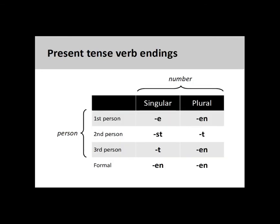In German, present tense verb endings are determined both by the number of the subject they modify and the person of the subject. There are also singular and plural endings for the formal form of address. The term 'present tense' simply means that the action of the verb occurs in the present moment and not, say, in the past. You will use this conjugation pattern most frequently in German.